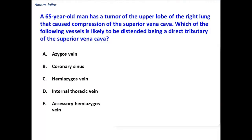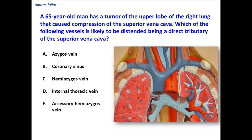A 65-year-old man has a tumor of the upper lobe of the right lung that caused compression of the superior vena cava. Which of the following vessels is likely to be distended, being a direct tributary of the superior vena cava?